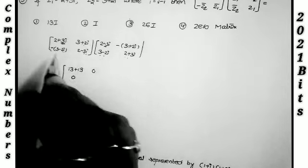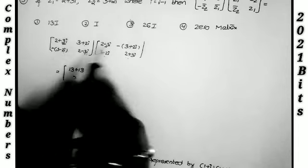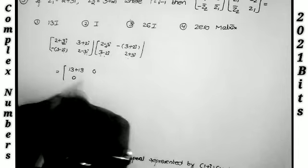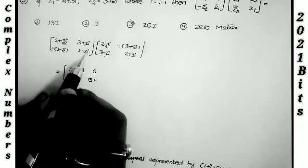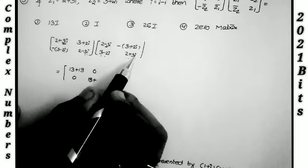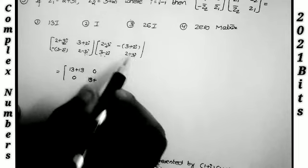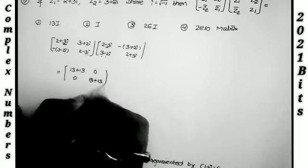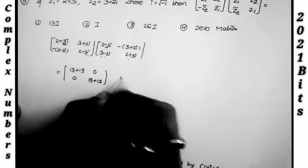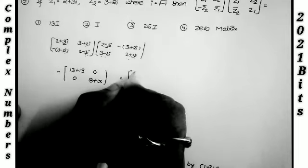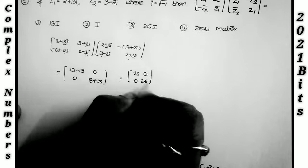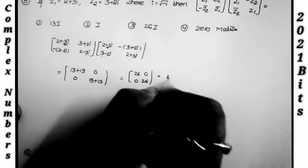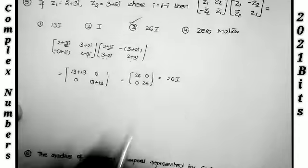For the diagonal entries: (2+3i)(2−3i) = 4+9 = 13, and (3+2i)(3−2i) = 9+4 = 13, giving 13+13 = 26. The last diagonal entry similarly gives 26. So the product matrix is [[26, 0], [0, 26]] = 26·I, which is the third option.